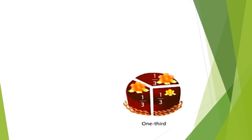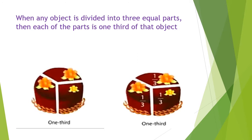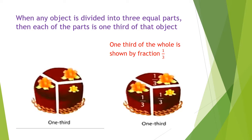Let's see another example. When any object is divided into three equal parts, then each of the parts is one third of that object. As you can see in this picture, one third of the whole is shown by a fraction as one upon three.